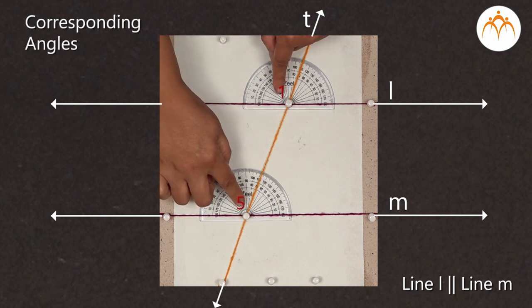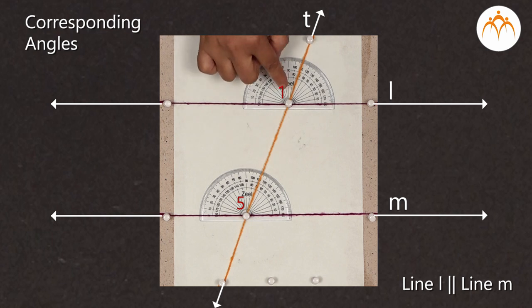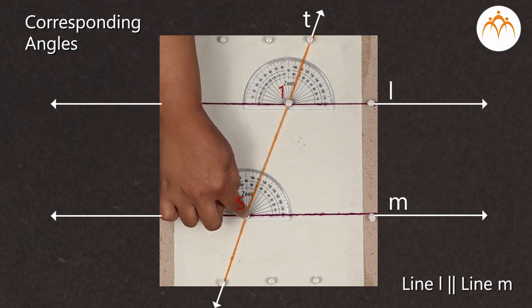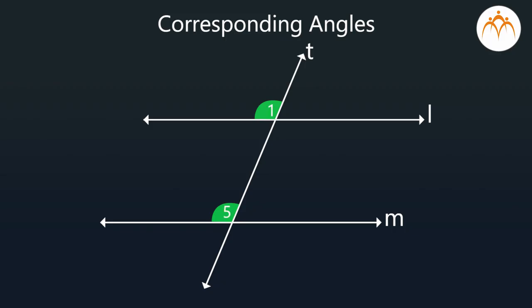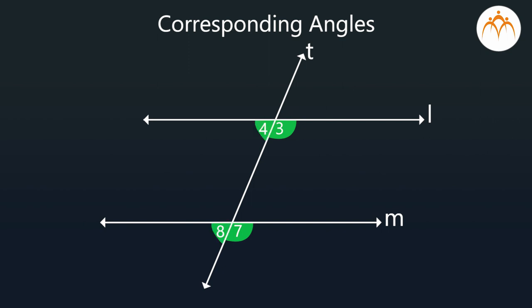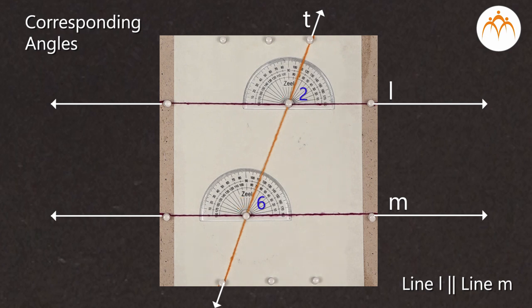Angle 1 and angle 5 form the first pair. Angle 1 gets formed between these lines at this corner, and angle 5 gets formed between these lines at this corner. Angle 1 and angle 5 are formed at these matching corners, so these two angles are called corresponding angles. Corresponding angles are such that they are on the same side of the transversal. In two pairs, both the angles are above the parallel lines, and in the other two pairs, both the angles are below the parallel lines.